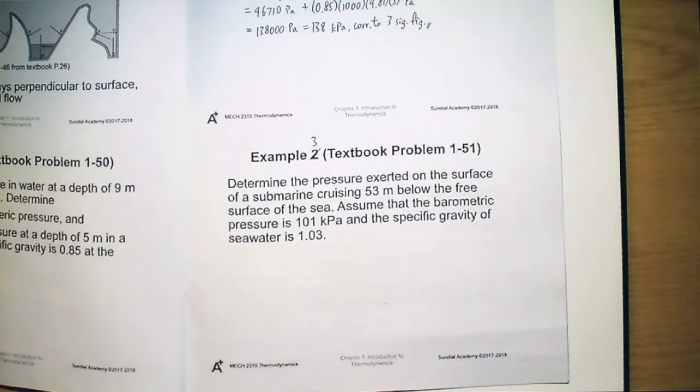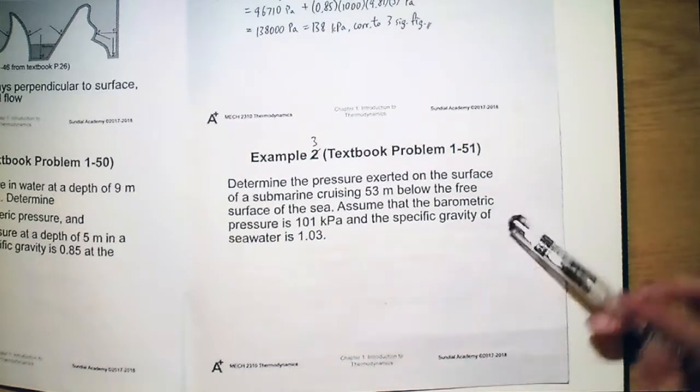We need to determine the pressure exerted on the surface of a submarine cruising 53 meters below the free surface of the sea. Here we assume that the barometric pressure will be 101 kPa and the specific gravity of seawater is 1.03.